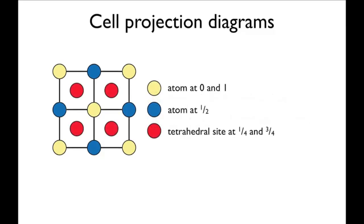The tetrahedral sites lie between the atoms in the cell projection diagrams at coordinates of a quarter and three quarters.